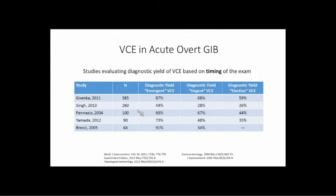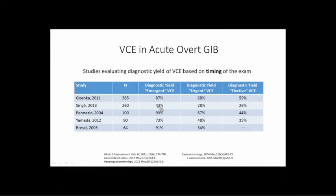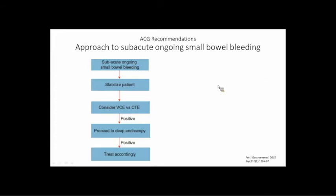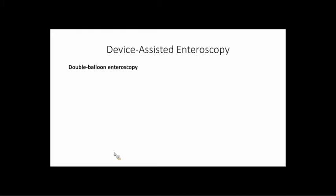How good is capsule in acute bleeding and hospitalized patients? It's pretty good. Studies show that timing is everything — the sooner you do the capsule, the more likely you are to find the bleeding. The diagnostic yield goes down as you go from emergent to urgent to elective capsule. In studies where capsules are done within 48 hours of a bleed, the diagnostic yield for finding either blood or an actual lesion is pretty high, and it leads to reasonable therapeutic yields — you find a lesion and can move on to enteroscopy or surgery.